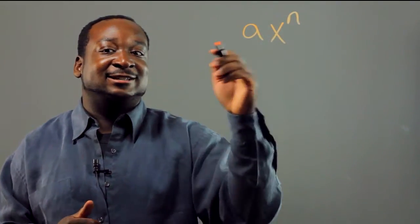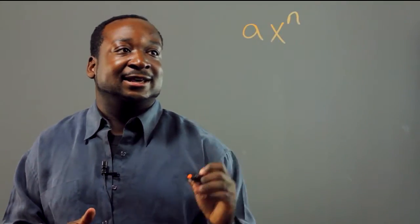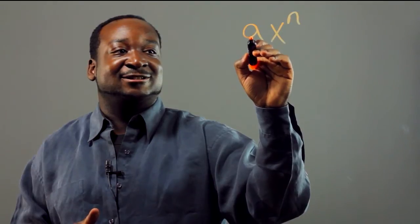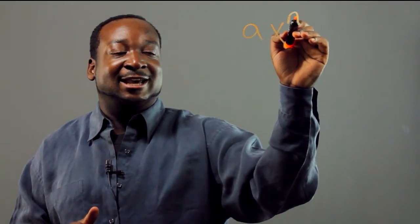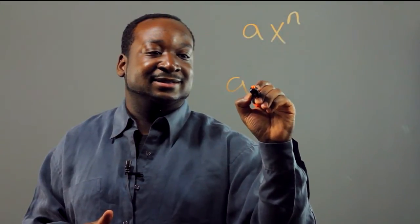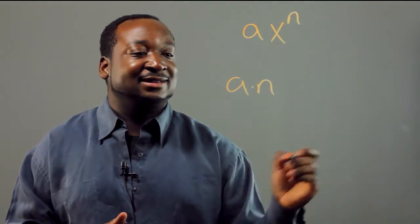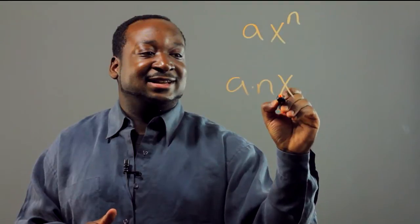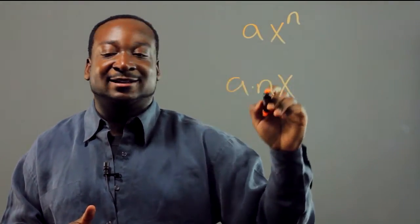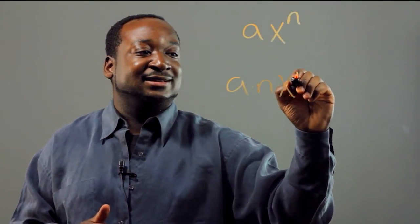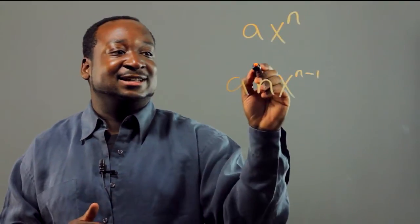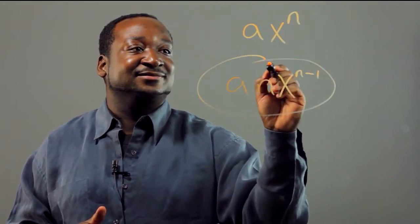I'm going to show you how to take the derivative of this. What you do is multiply a, which is the coefficient, times the exponent. That's a times n. Add x there. You're going to keep the same exponent and subtract it by 1. Here's the derivative of this.